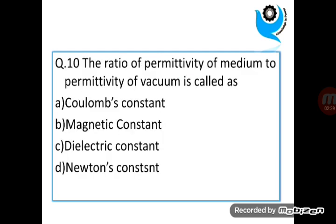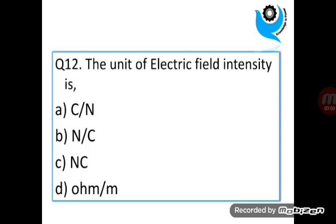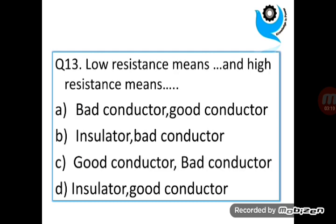Question 10. The ratio of permittivity of medium to permittivity of vacuum is called as Dielectric constant. Question 11. The value of dielectric constant for air is. Answer is 1. Question 12. The unit of electric field intensity is. Answer is Newton per coulomb. Question 13. Low resistance means dash and high resistance means dash. Answer is C.